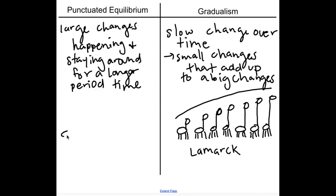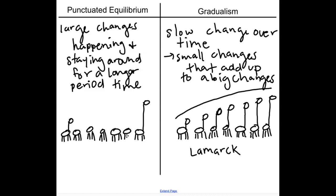Going back to the giraffe example for punctuated equilibrium: we're going from a small-neck giraffe to eventually a really long-neck giraffe. Giraffes would be born for thousands of years with the same size neck, and then maybe one giraffe would be born with a really, really long neck — slightly longer than all the others.